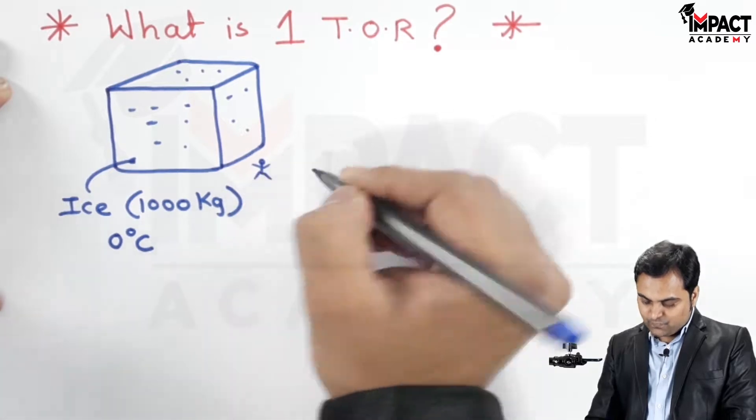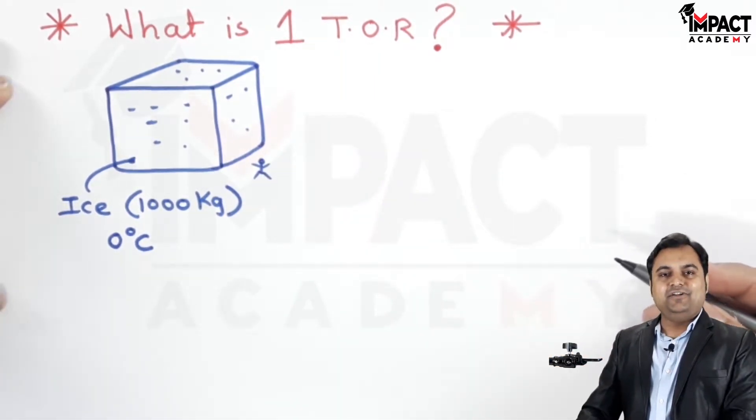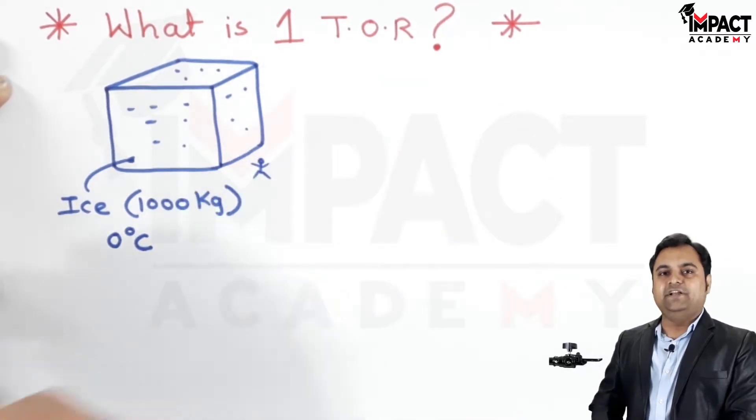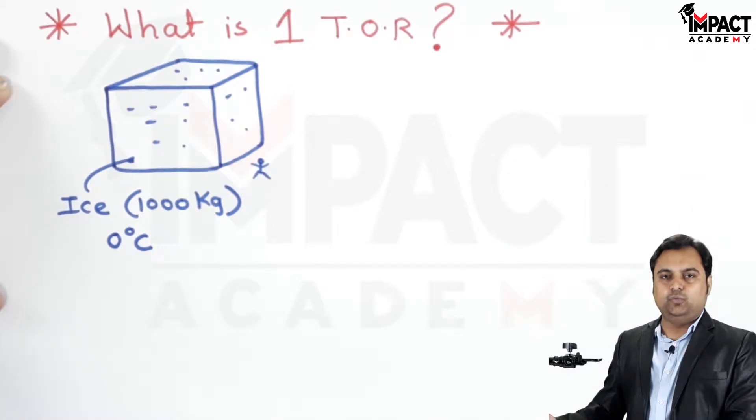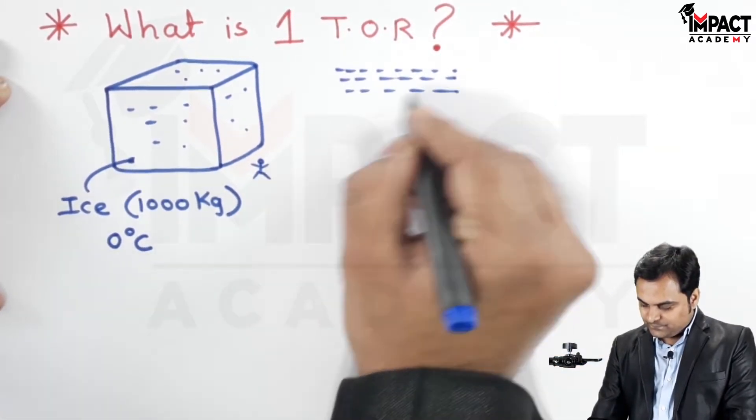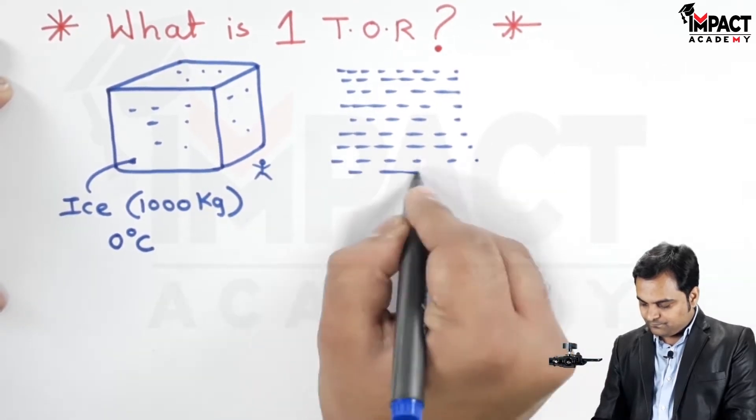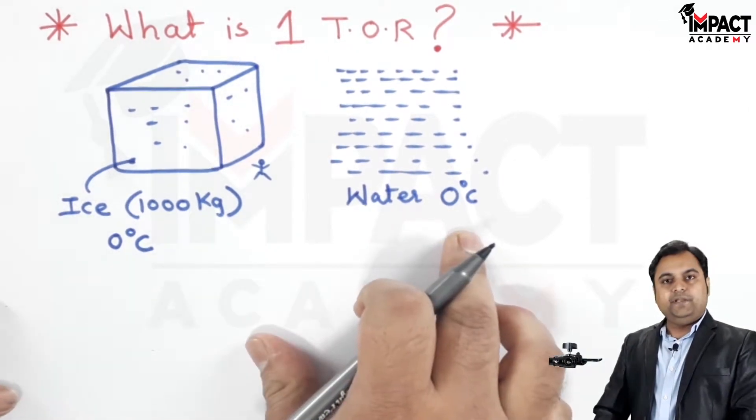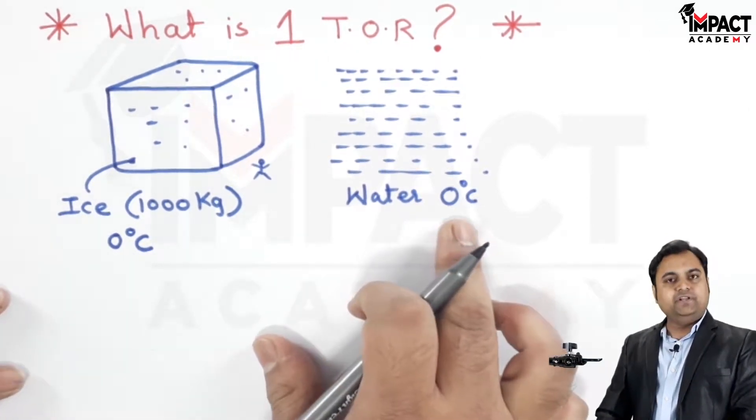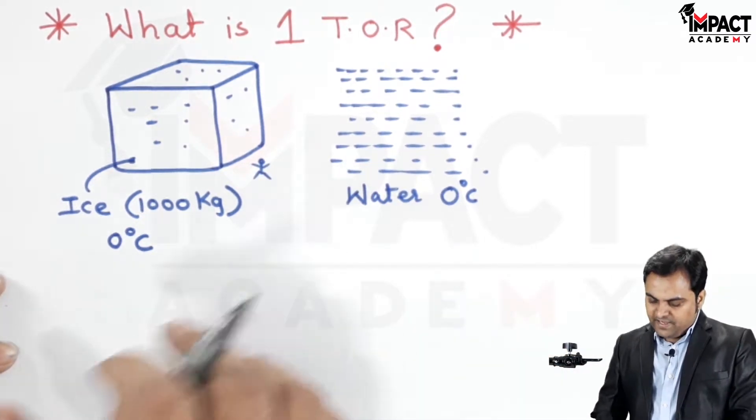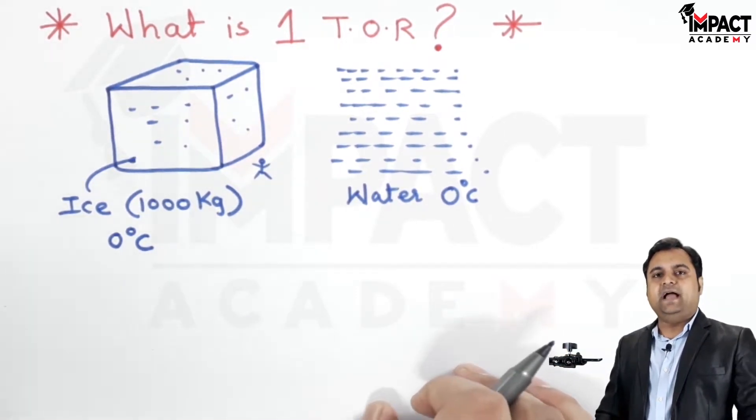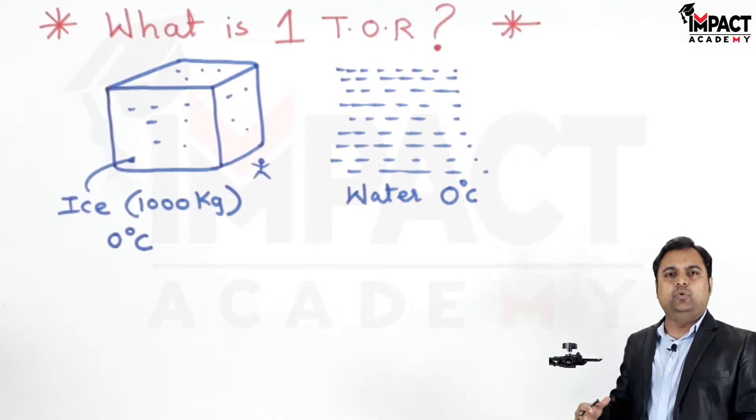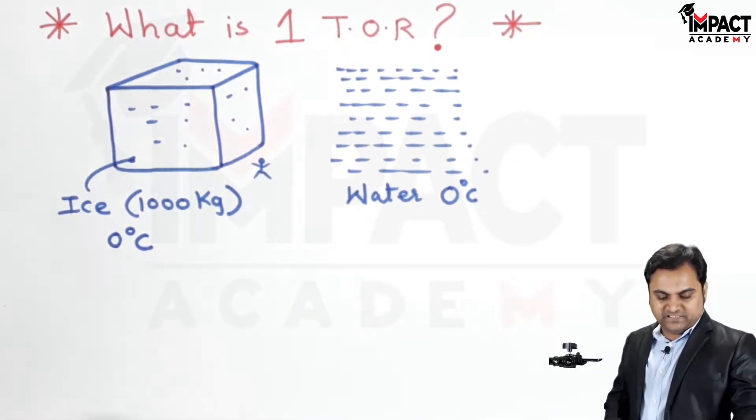During that 24 hours, there would be uniform melting of ice and it would get converted into water. This water would also be at 0 degrees Celsius. We have to make this ice melt uniformly and naturally without supplying any external means like a blower or heater. This ice would be melting on its own.